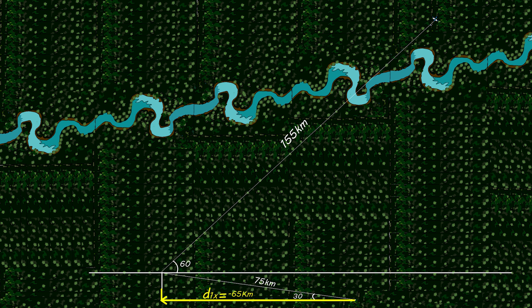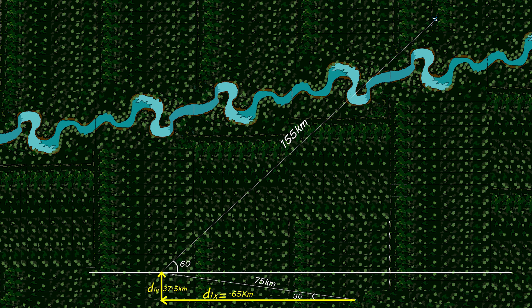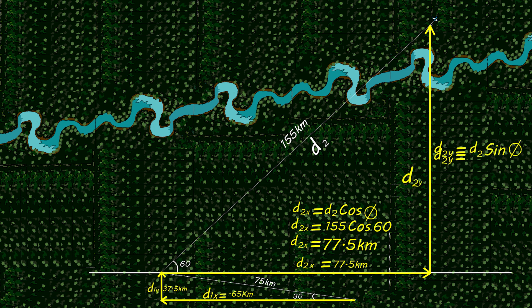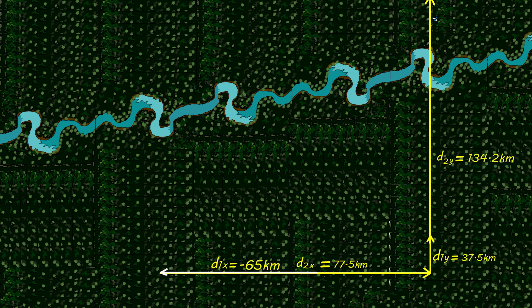d1y = 75 sine 30 = 37.5 km (positive y-axis). For the second displacement d2: d2x = 155 cosine 60 = 77.5 km (positive x-axis). d2y = 155 sine 60 = 134.2 km (positive y-axis).